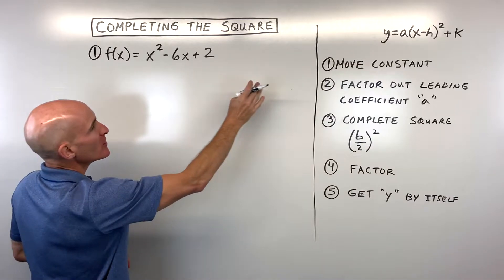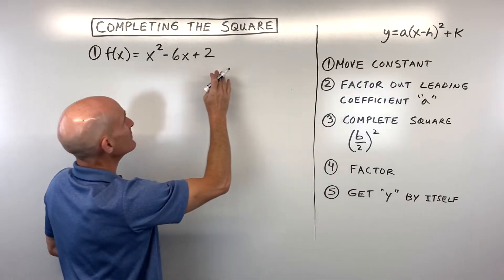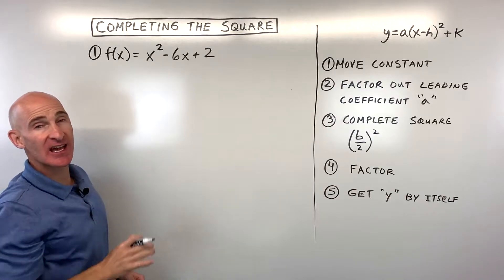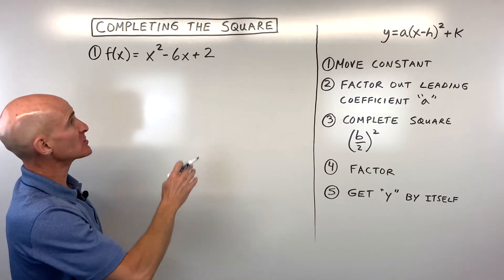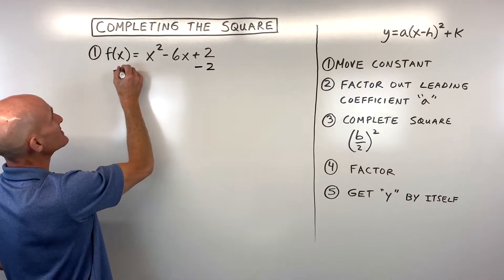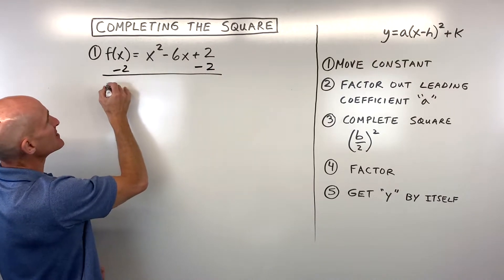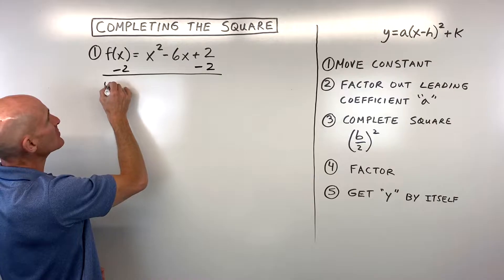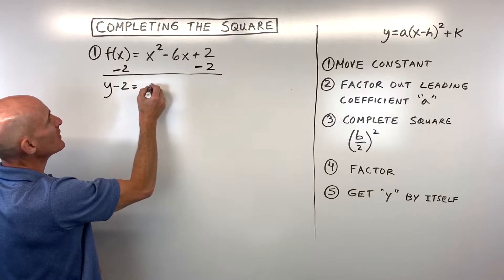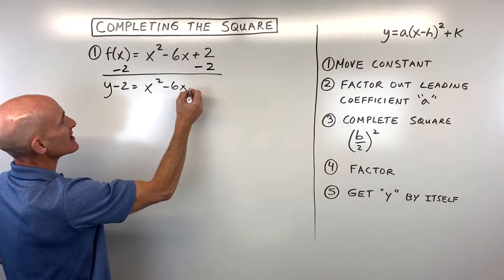The first thing you want to do is move the constant — just this number — over to the other side to get it out of the way. So we're going to subtract two from both sides of this equation. We can think of f(x) as y, so we'll write y minus two equals x squared minus six x.